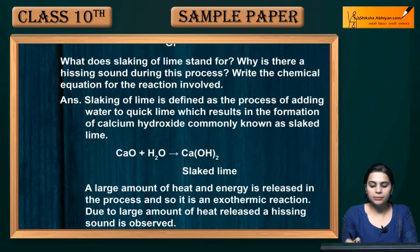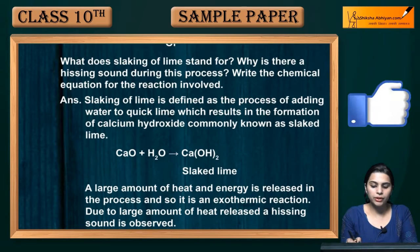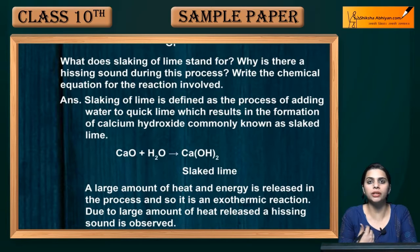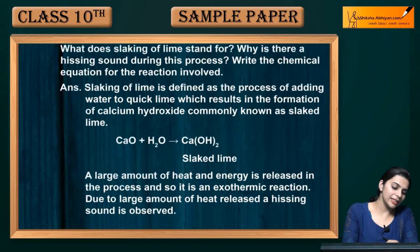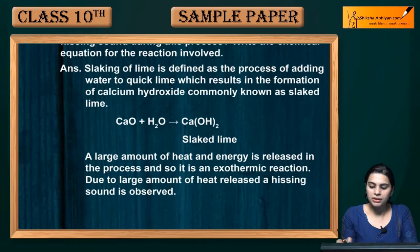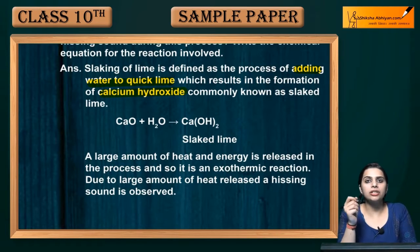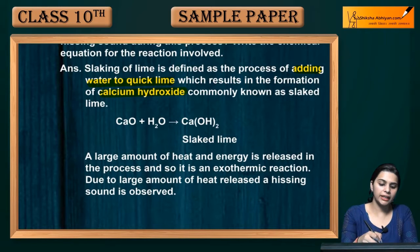Next: what does slaking of lime mean, and why is there a hissing sound during this process? Write the chemical equation for the reaction involved. Slaking of lime is defined as the process of adding water to quick lime, which results in the formation of calcium hydroxide. Quick lime is CaO, also known as calcium oxide.